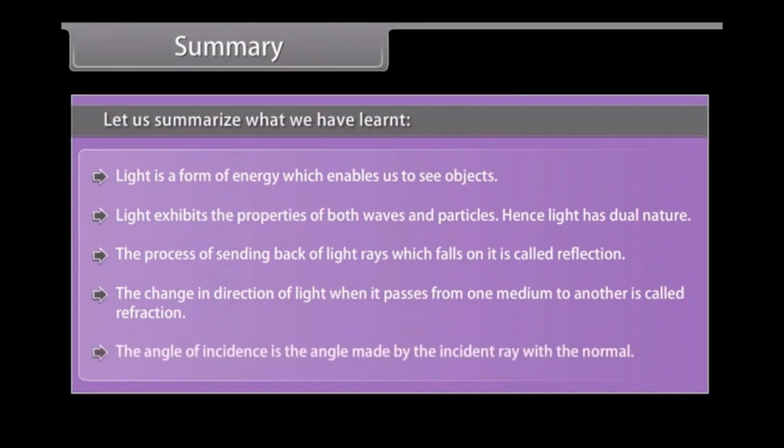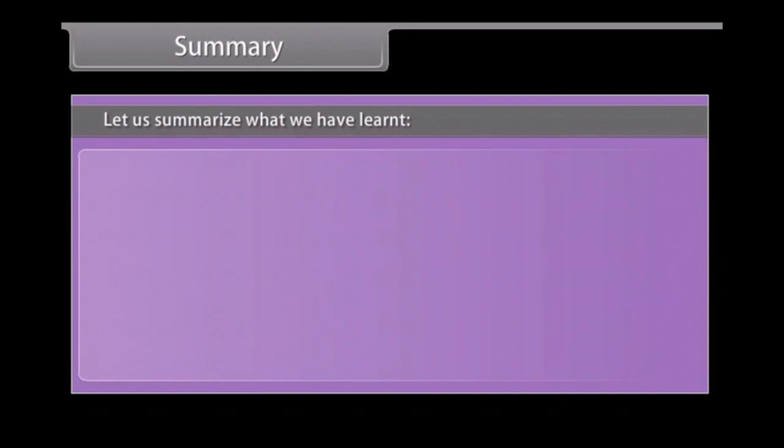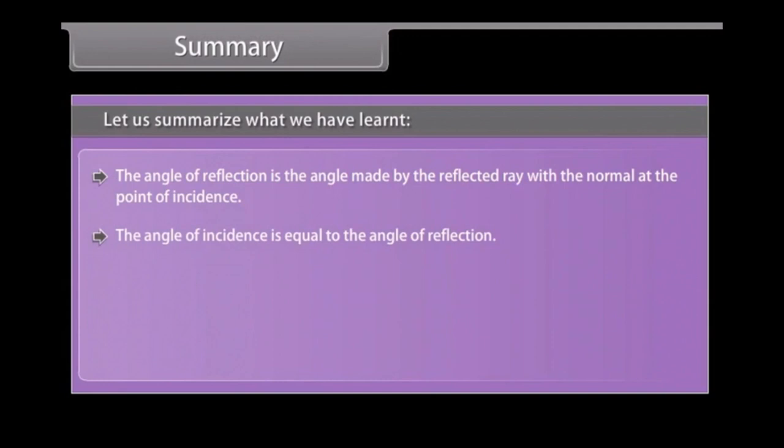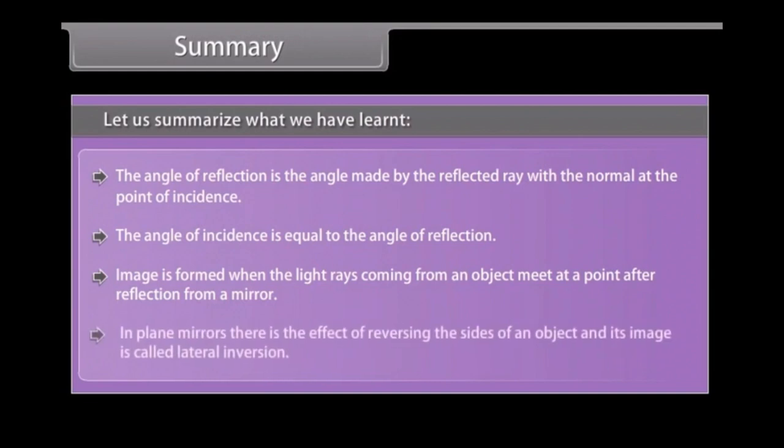The angle of incidence is the angle made by the incident ray with the normal. The angle of reflection is the angle made by the reflected ray with the normal at the point of incidence. The angle of incidence is equal to the angle of reflection. Image is formed when the light rays coming from an object meet at a point after reflection from a mirror. In plane mirrors, the effect of reversing the sides of an object and its image is called lateral inversion.